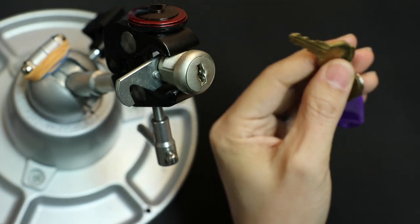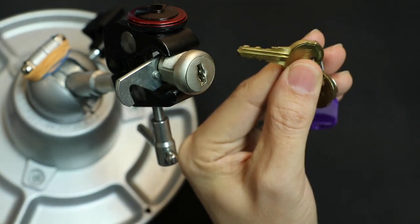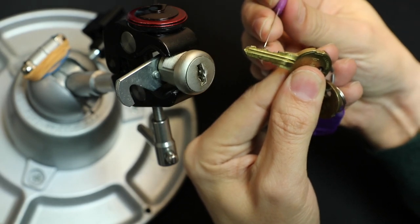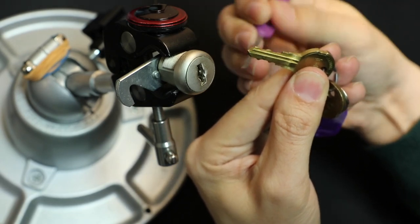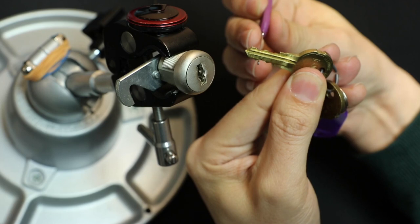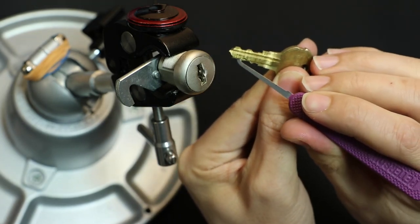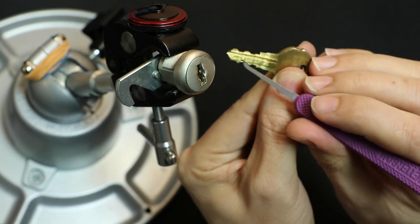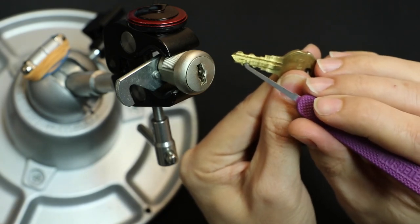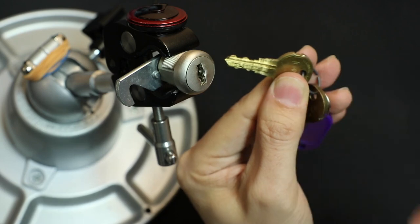So what that means is it has five wafers that interact along the top bitting here. It has five that interact along the bottom bitting here. And then it has another four that interact along the side bitting here. This key is not a good example. I should have brought out another key. It's got three that are the same height and then this one lower one. So that could have different cuts in there.